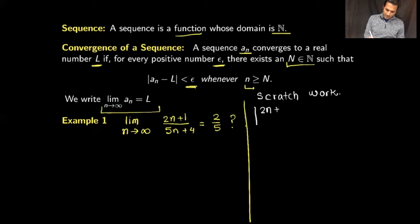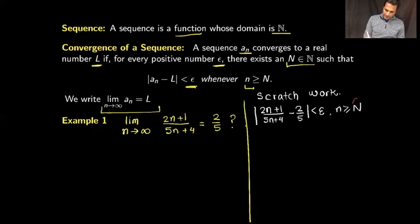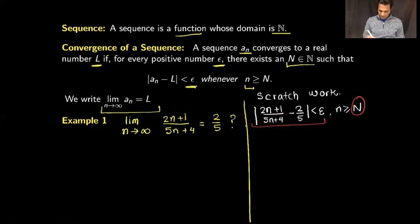In the scratch work, I would like to show that |(2n+1)/(5n+4) − 2/5| is less than epsilon when little n is bigger than or equal to capital N. My goal is to find that capital N so that this inequality holds.